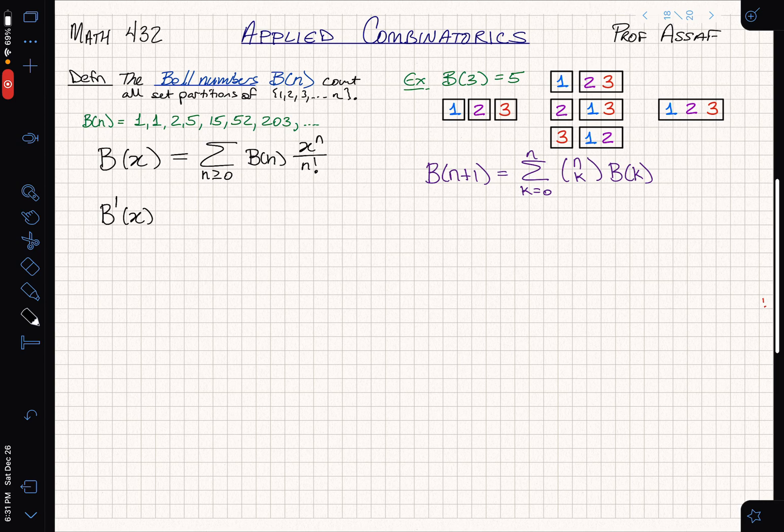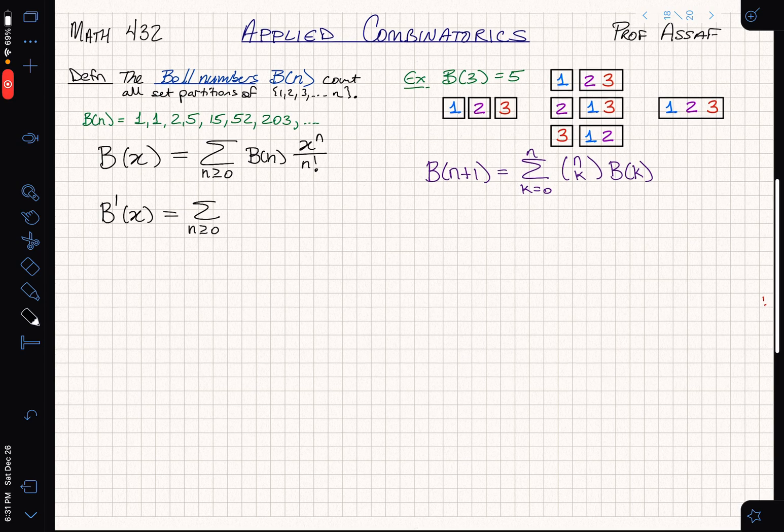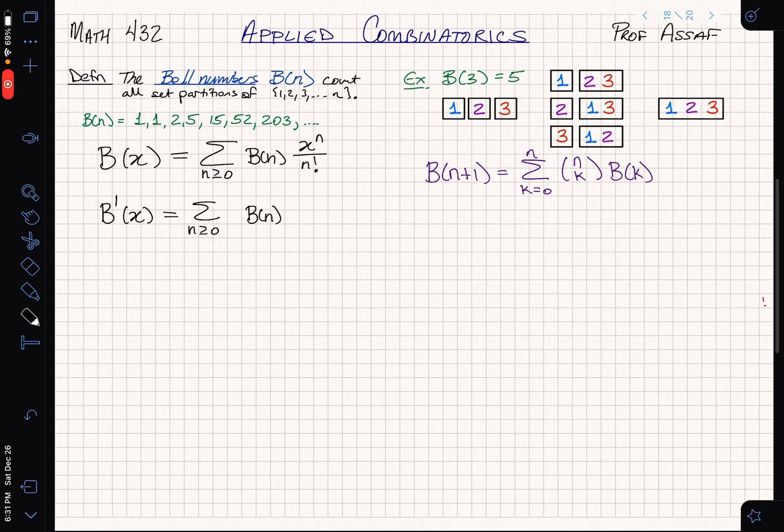There are a couple ways that I can do it. I can shift indices either by multiplying by x on both sides or by differentiating. It takes a little bit of experience to see which is the better thing to do. In this case, it turns out that what I actually want to do is look at the derivative with respect to x of the generating function.